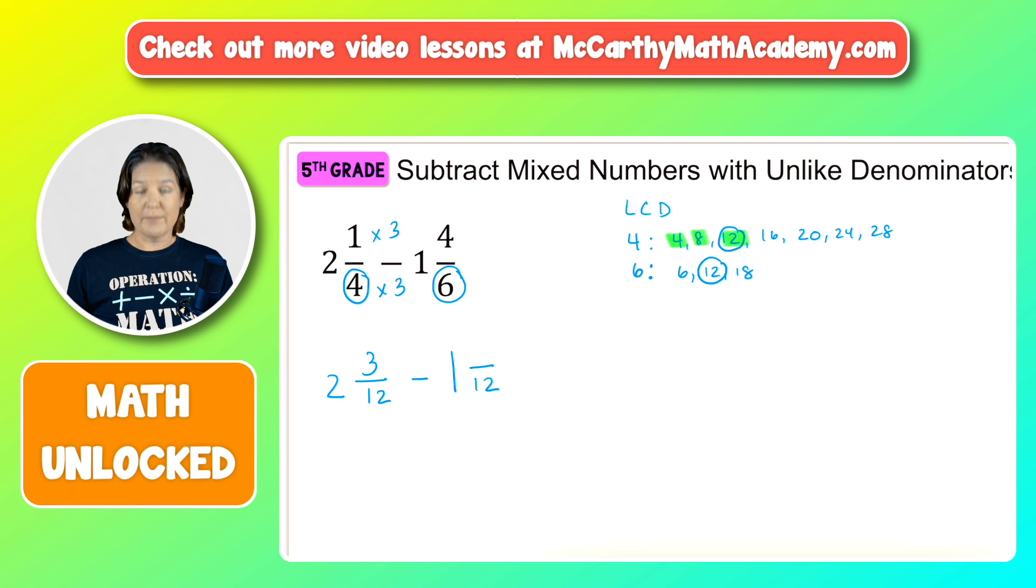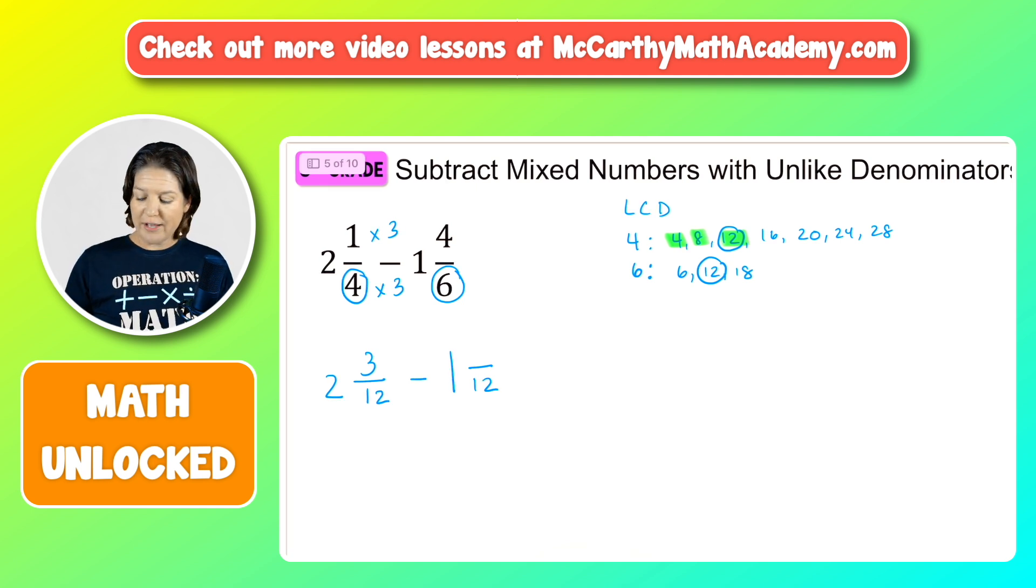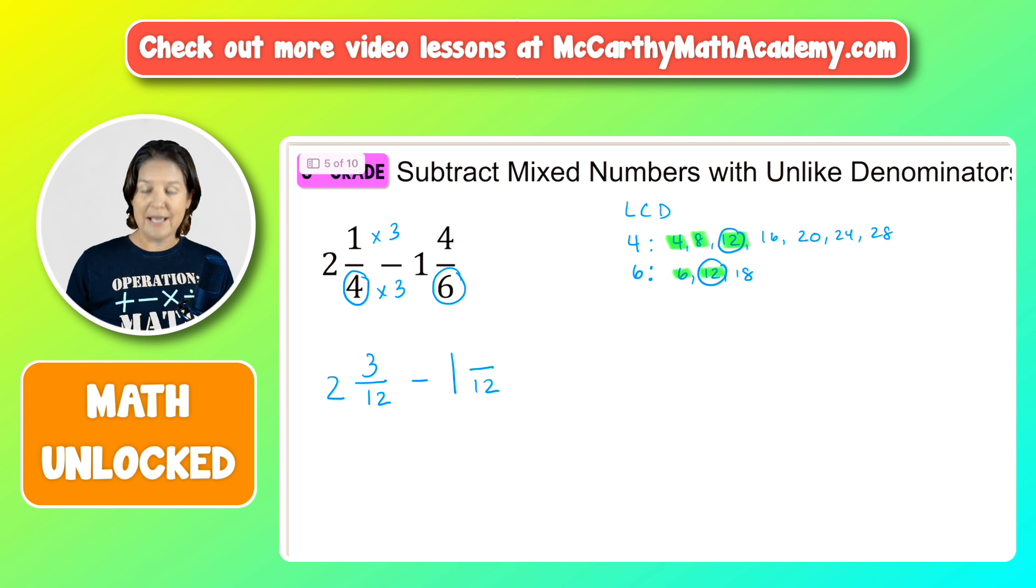Now we went from the denominator of 6 to the denominator of 12. How did we do that? By counting by 6 twice. So multiply times 2 in the denominator and in the numerator: 4 times 2 equals 8.